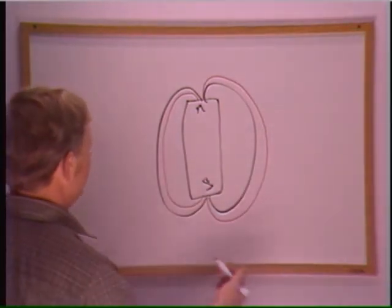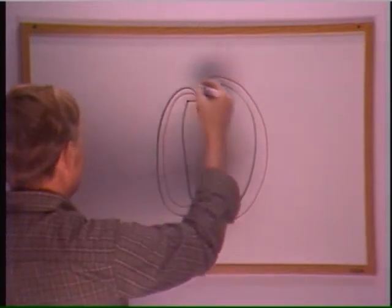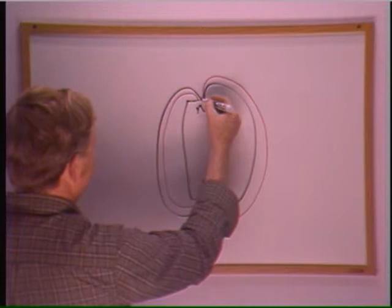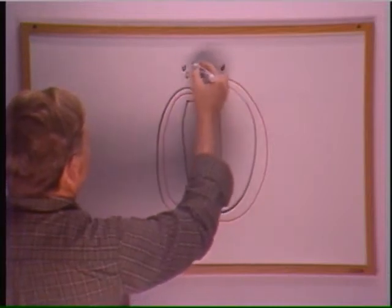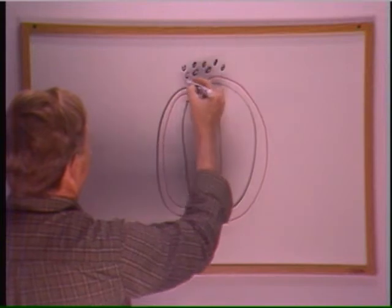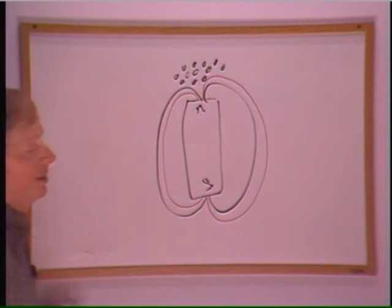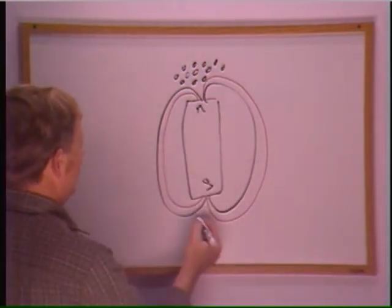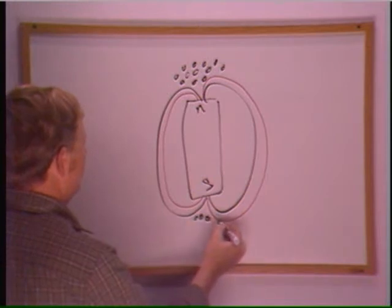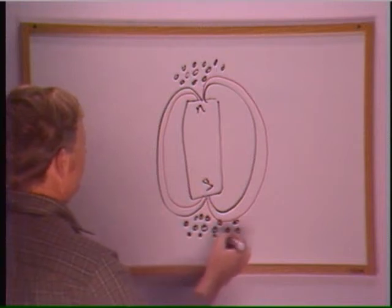Now what creates a dipole is when you have north monopoles moving all in the same direction. And all the excess monopoles, well these here are all north monopoles, all your excess north monopoles are going to collect on this end. And on the south pole you have excess amount of south magnetic monopoles.